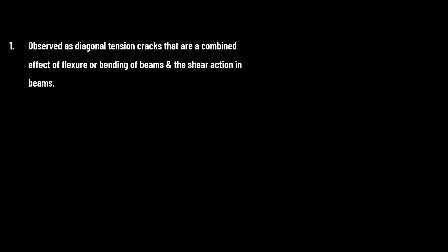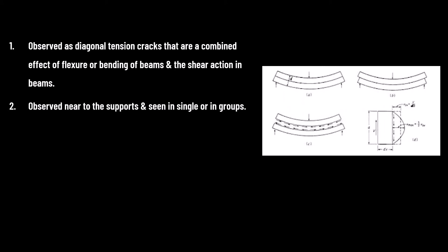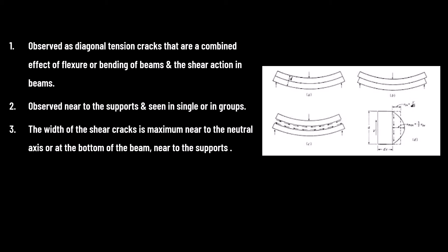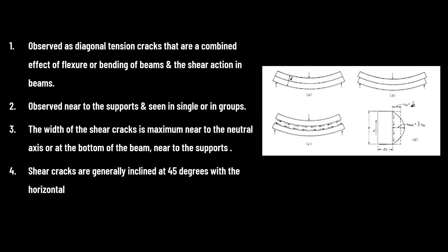Shear cracks in RCC beams are observed as diagonal tensile cracks that are a combined effect of flexural bending and shear action. They are observed near the supports and seen singly or in groups. The width of the shear crack is maximum near the neutral axis or at the bottom of the beam, near the supports where shear is maximum, as shown in the figure. Shear cracks are generally inclined at 45 degrees with the horizontal.